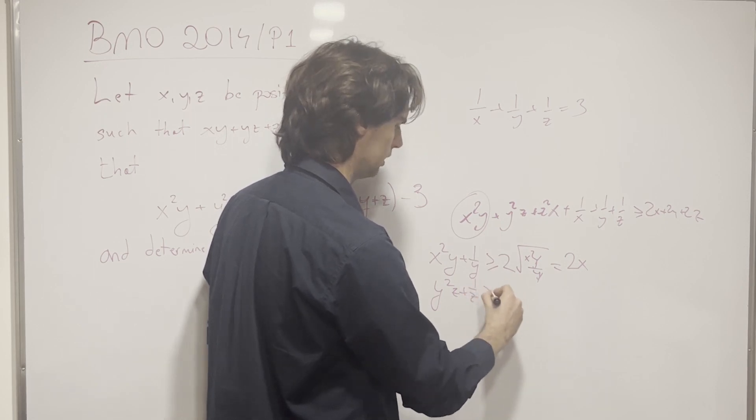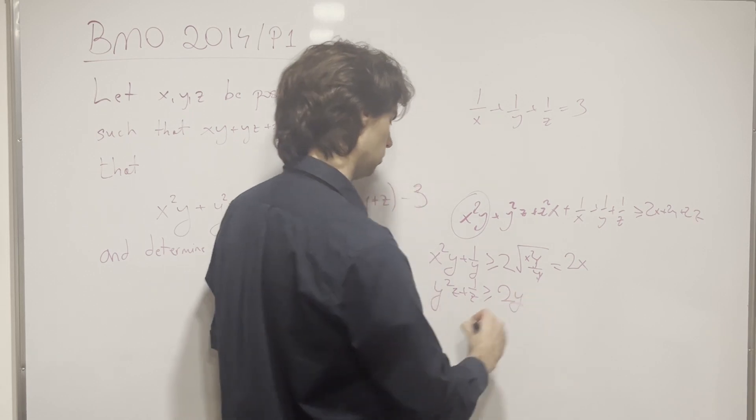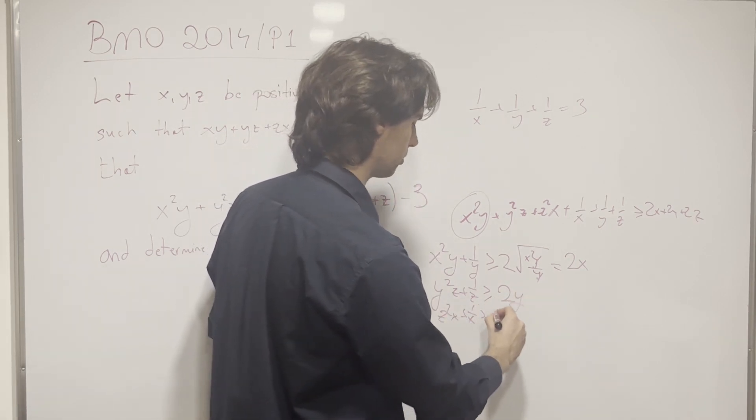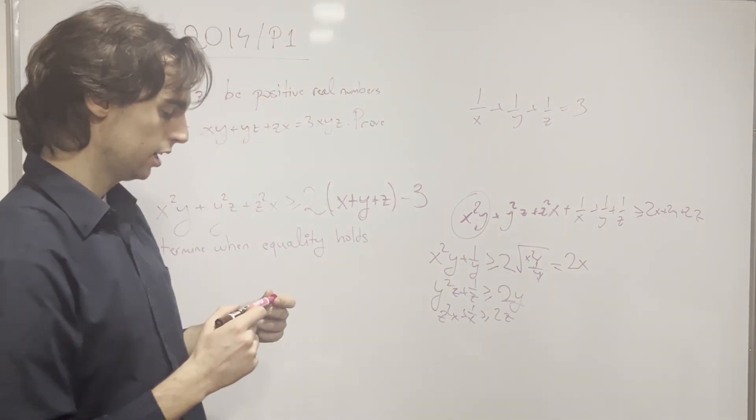We just do this now cyclically. y squared z plus 1/z is greater than or equal to 2y. z squared x plus 1/x is greater than or equal to 2z. You add them up, and we get the inequality, which we've then proved.